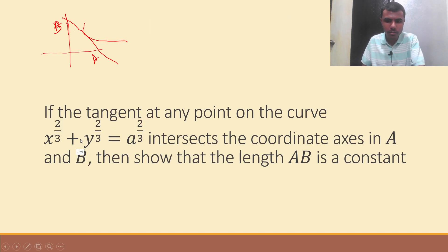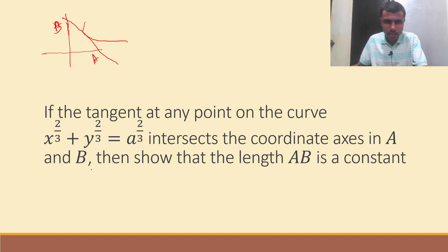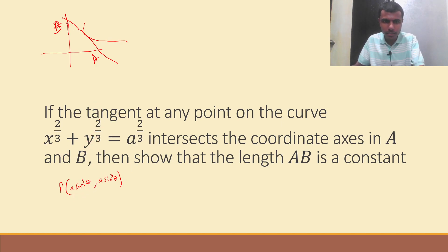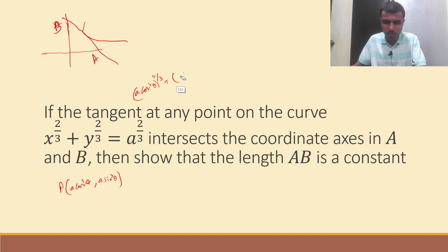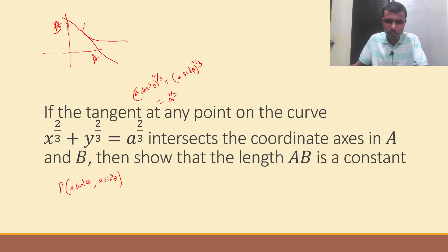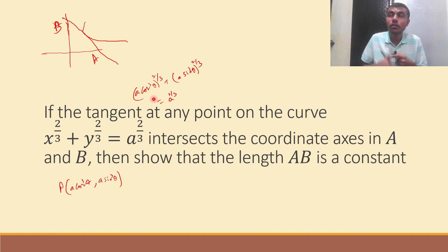See, what is my given curve? My given curve is x^(2/3) + y^(2/3) = a^(2/3). My point is P = (a·cos³θ, a·sin³θ). Now just substitute this point in the LHS. What I will get is (a·cos³θ)^(2/3) + (a·sin³θ)^(2/3).